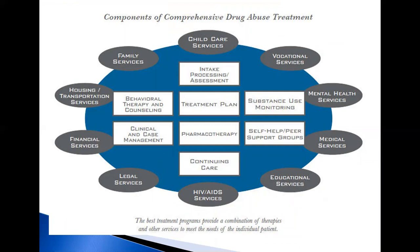Addiction is a complex but treatable disease that affects brain function and behavior. Drugs of abuse alter the brain's structure and function, resulting in changes that persist long after drug use has ceased. This may explain why drug abusers are at risk for relapse even after long periods of abstinence and despite the potentially devastating consequences. Effective treatment attends to the multiple needs of the individual, not just his or her drug abuse.